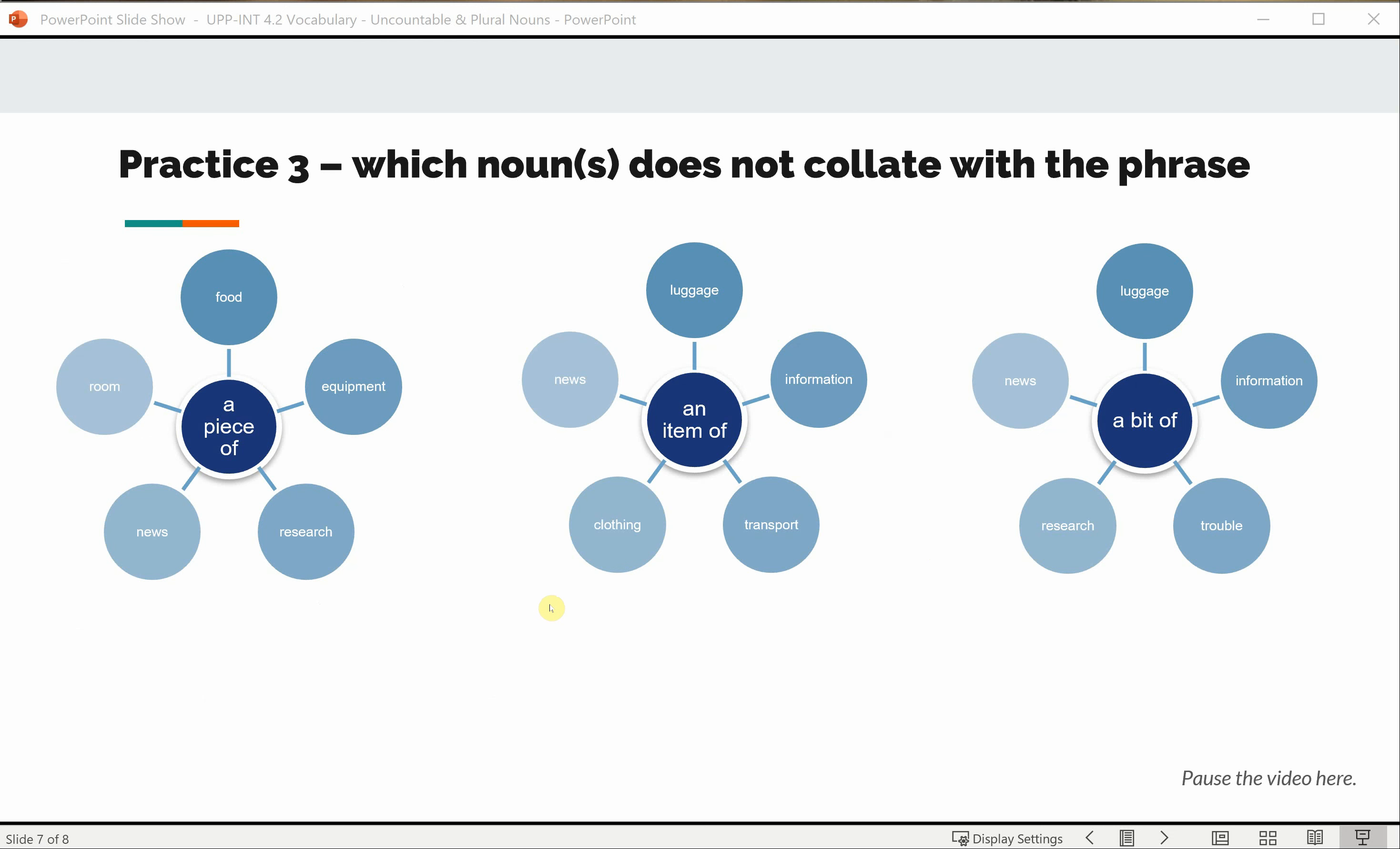Practice 3. Which noun or nouns does not collocate with the phrase in the middle circle? Again pause the video while you try this activity. But when you find the noun that does not collate, which phrase does it collate with?